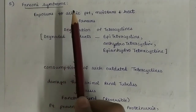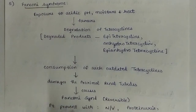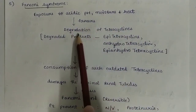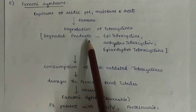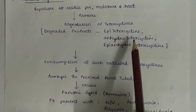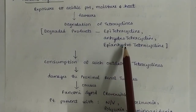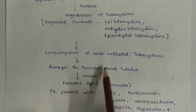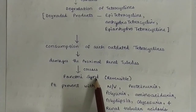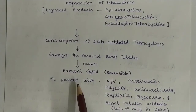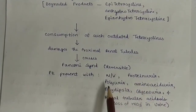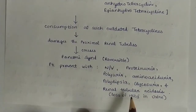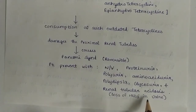Next, Fanconi syndrome — very important. Exposure to acidic pH, moisture, and heat favors degradation of tetracyclines. Degraded products of tetracycline are epitetracycline, anhydrotetracycline, and epi-anhydrotetracycline. Consumption of such outdated tetracycline damages the proximal renal tubules and causes Fanconi syndrome, which is reversible. The patient presents with nausea, vomiting, proteinuria, polyuria, aminoaciduria, polydipsia, glycosuria, renal tubular acidosis, and loss of bicarbonate in urine.